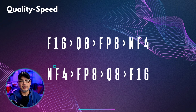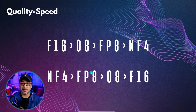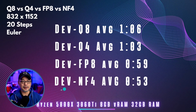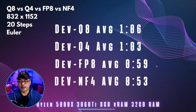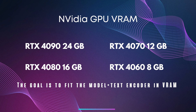When it comes to generation speeds, NF4 is going to be the quickest in most cases, followed by FP8, then Q8, then F16. These are based on my system specs — there could be cases where Q8 is faster than FP8. My system is a Ryzen 5800X, 3060 Ti with 8 gigabytes of VRAM, and 32 gigabytes of system RAM. I didn't do F16 because I can't run it on my system. What it boils down to is speed over quality. For me, the deciding factor is quality over speed — is a 13-second difference enough for me to choose NF4 over Q8? Not really.